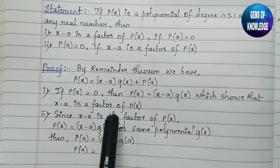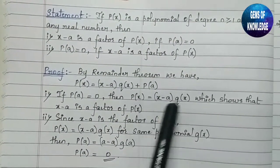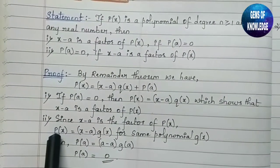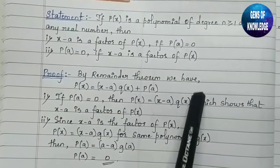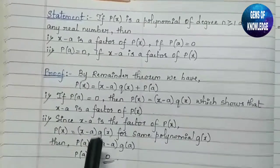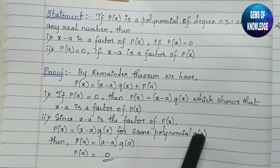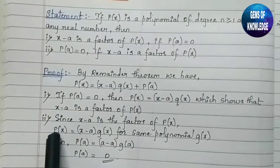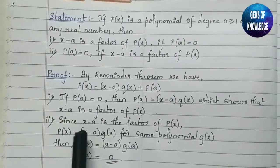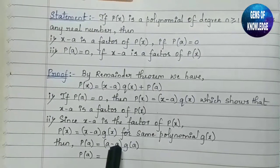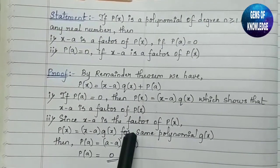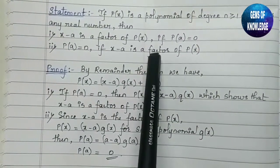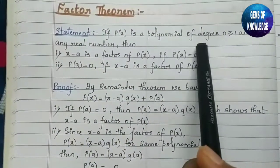For the second condition, since (x − a) is a factor of p(x), we can write p(x) = (x − a)·g(x) for some polynomial g(x). Substituting x = a gives p(a) = (a − a)·g(a) = 0·g(a) = 0. Hence p(a) = 0. Both conditions are proved, and the Factor Theorem is established.